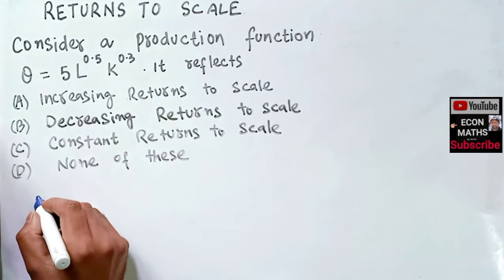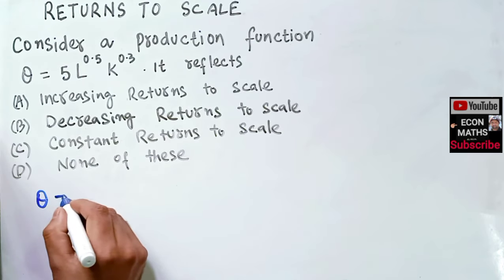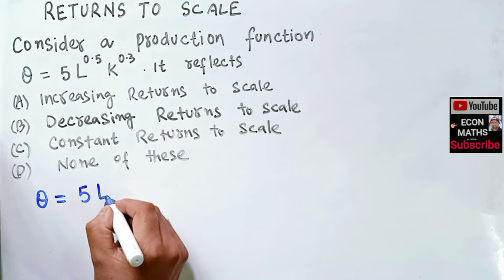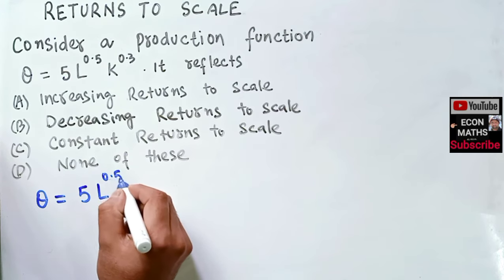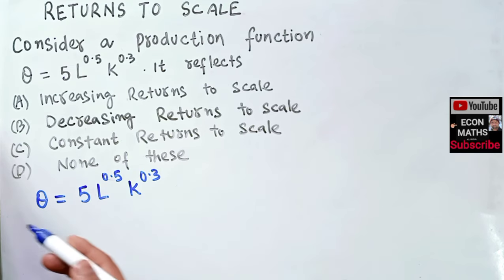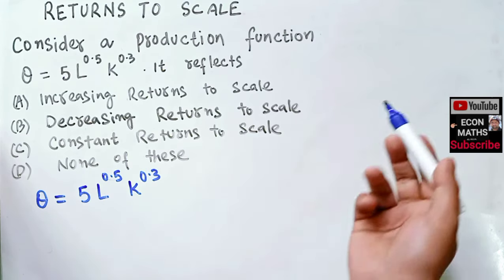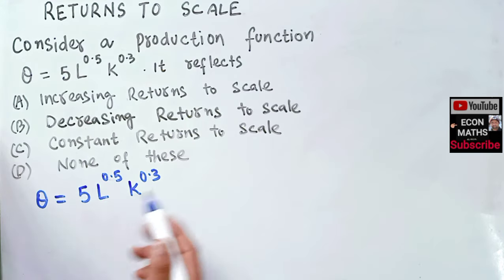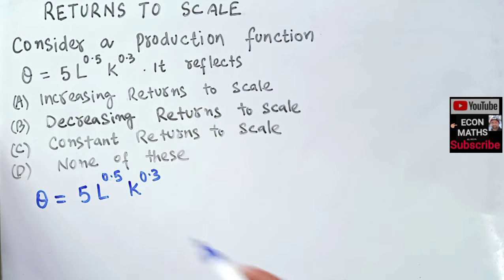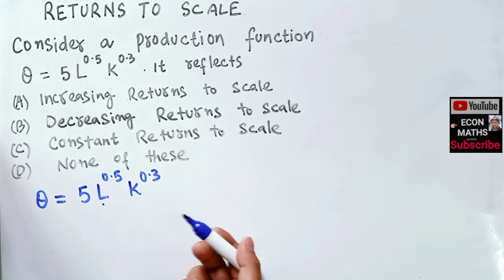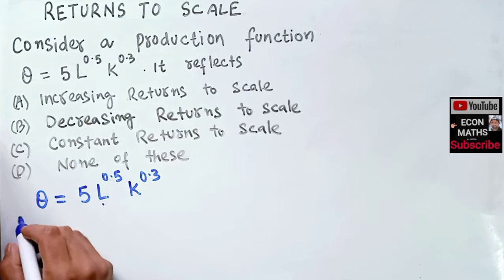We are given a Cobb-Douglas production function where Q, the output, equals 5 * L^0.5 * K^0.3. First we will explain the method, and then I will give you a shortcut formula to find out the returns to scale. What we will do is increase labor and capital by a factor lambda.